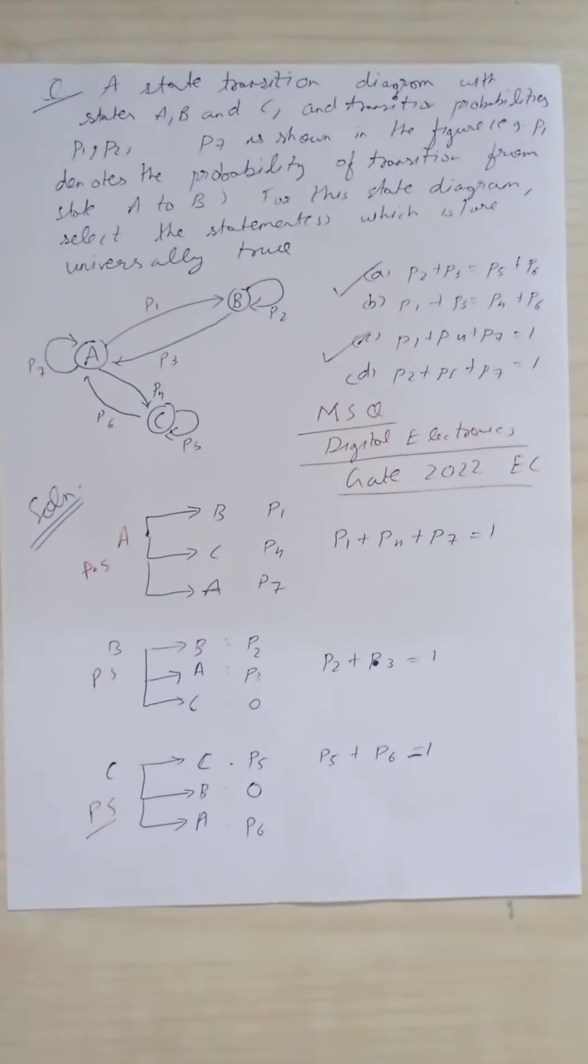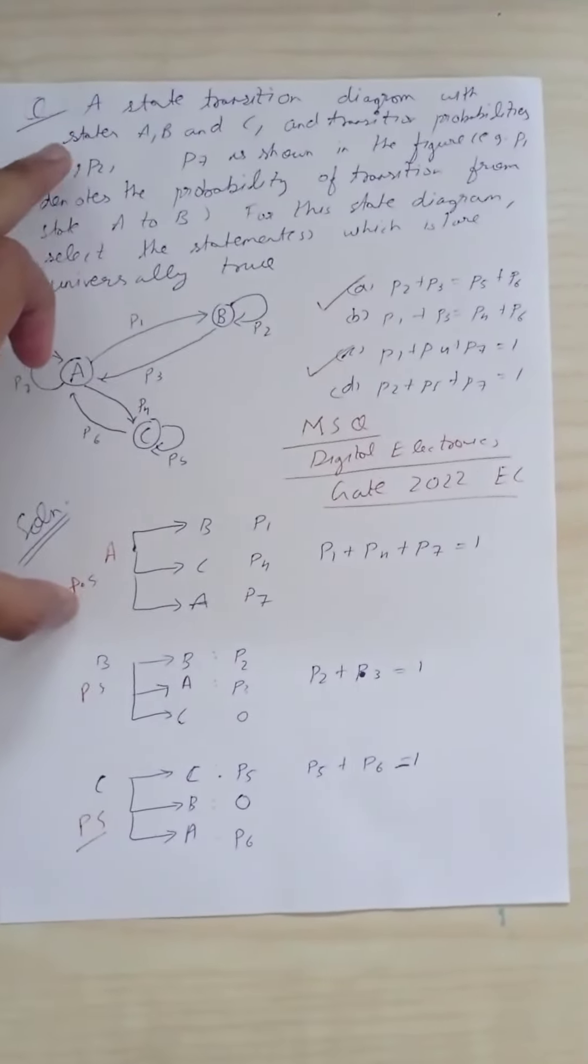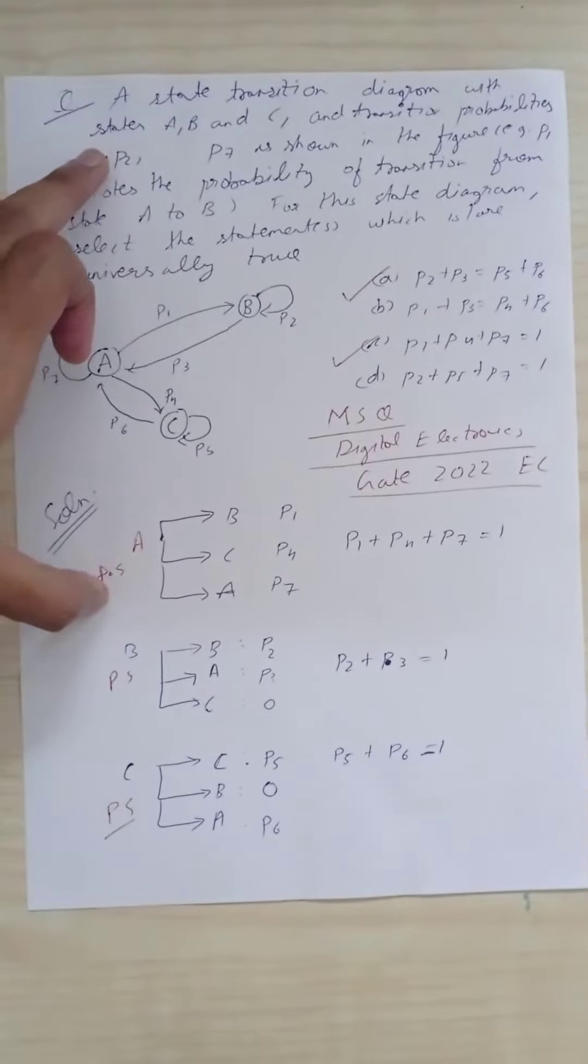This is a question from GATE 2022 Electronics branch. A state transition diagram is given with three states.